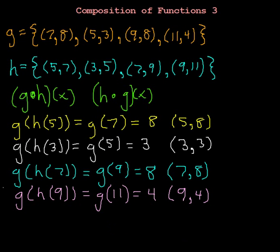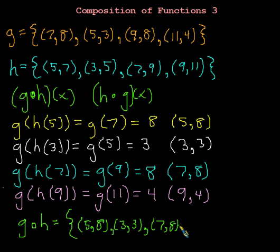And what this means is, in the end, I can wrap this up by saying this. That g of h of x, or as I wrote up there, I guess I could just write g of h, will be equal to this set: 5, 8. That's one ordered pair. And 3, 3. And 7, 8. And 9, 4. So that is my set of ordered pairs that is g of h.